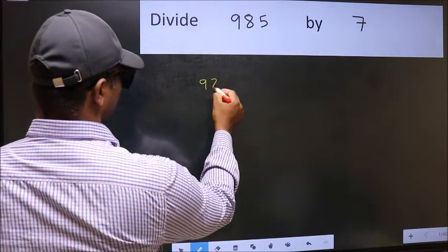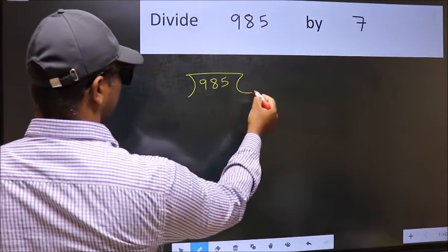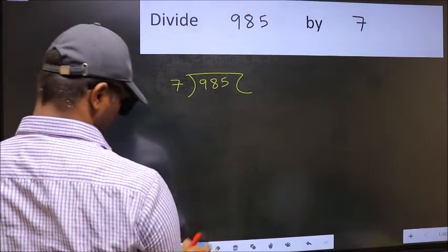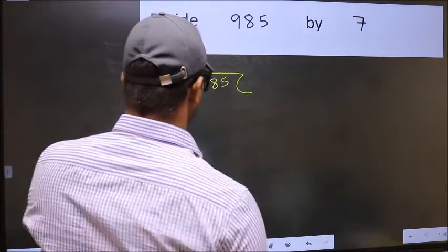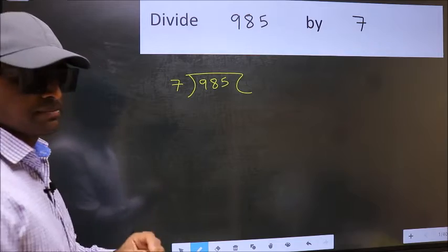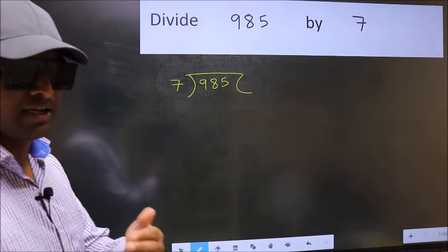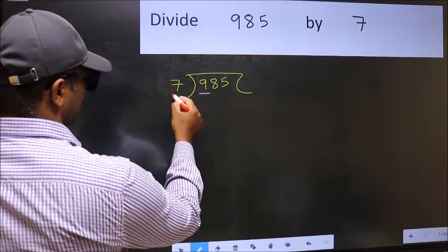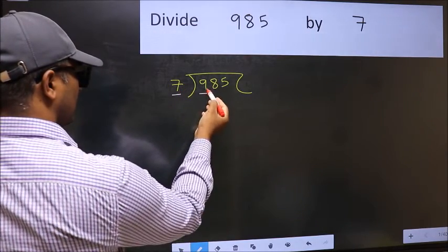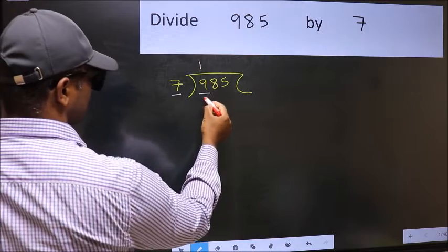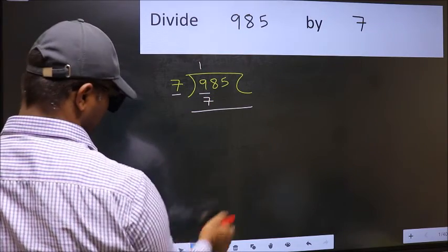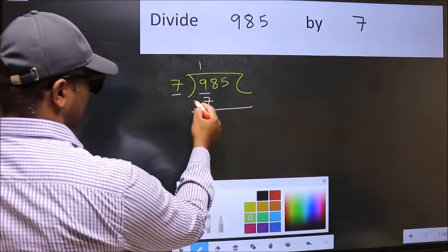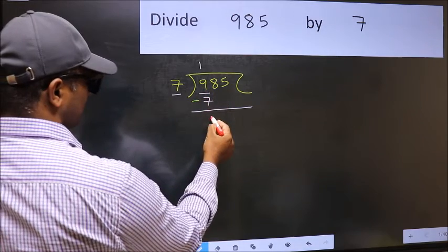9.85 and 7 here. This is your step 1. Next, here we have 9 and here 7. Our number close to 9 in the 7 table is 7 once, which is 7. Now you should subtract: 9 minus 7 is 2.